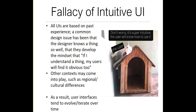There is also the fallacy of intuitive UI. There are ways to make a user interface easier to use, but inherently all user interfaces are built upon past experience. A common design issue is that if a designer knows a thing so well, they develop the mindset that 'if I understand this feature, clearly my users will find it obvious too.' That may not always be the case. Other contexts come into play — regional or cultural differences, such as the color white: in Western cultures it represents purity or cleanliness, while in Asian cultures it can represent death or mourning. As a result, user interfaces tend to iterate and evolve over time.